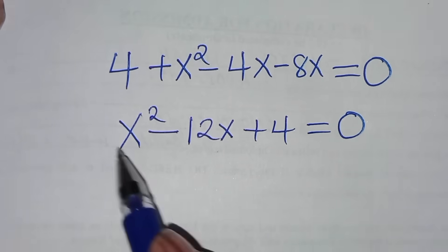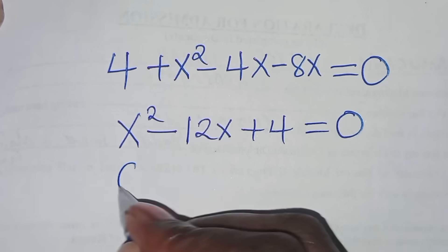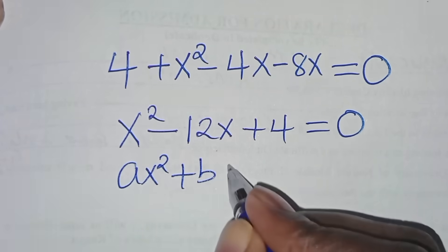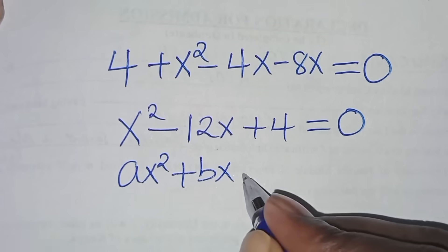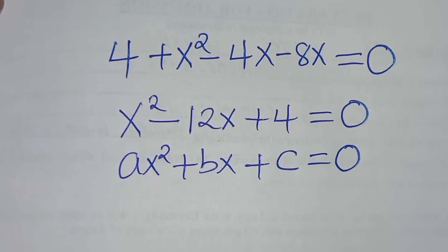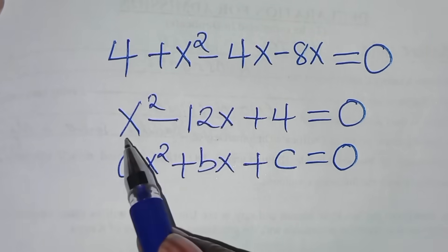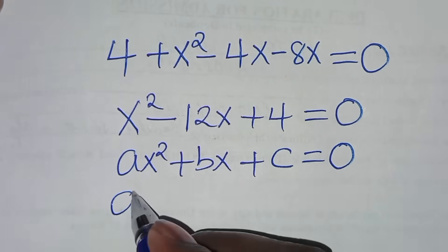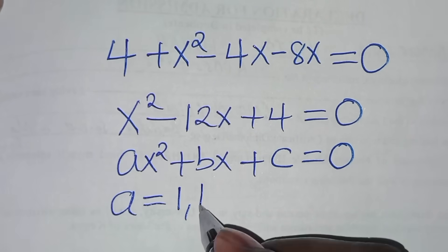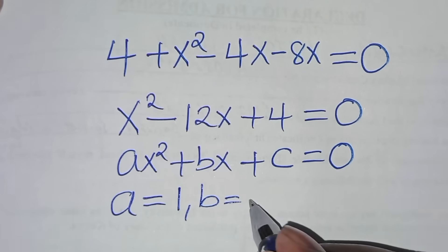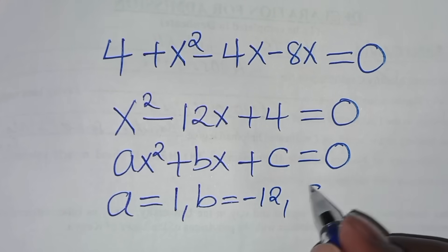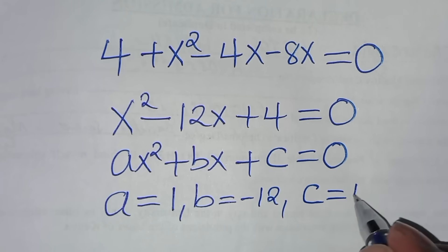This is a quadratic equation of the form ax squared plus bx plus c equals 0. From this equation we have that a equals 1, b equals negative 12, and c equals 4.